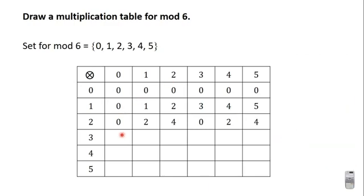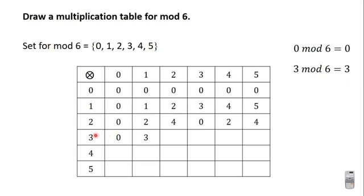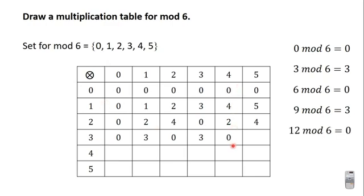Let's move on to the next row. We have 3 times 0; 3 times 0 is 0, and 0 mod 6 is 0. 3 times 1 is 3; 3 mod 6 is 3. 3 times 2 is 6; 6 mod 6 is 0. 3 times 3 is 9; 9 mod 6 is 3. 3 times 4 is 12; 12 mod 6 is 0.